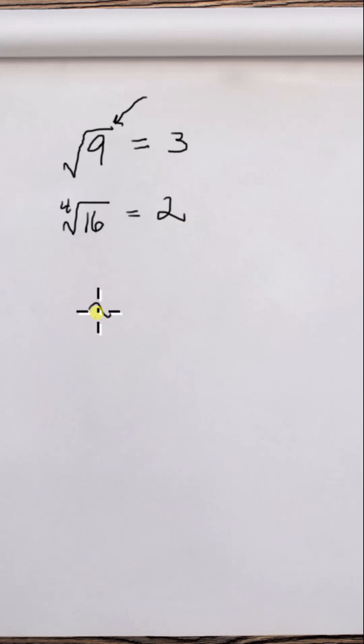But what about this? Don't we do this? This is still a principal root. This is a principal root that we put a plus or minus in front of.